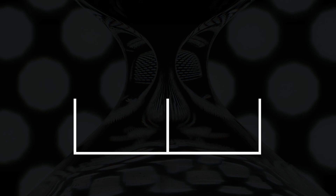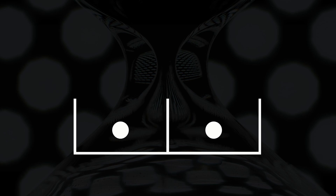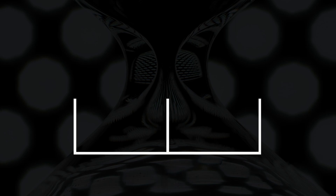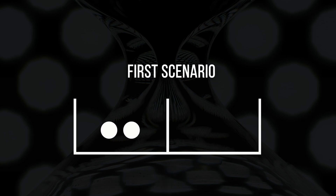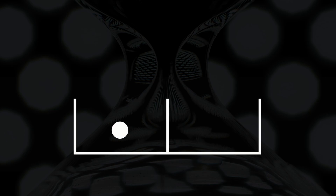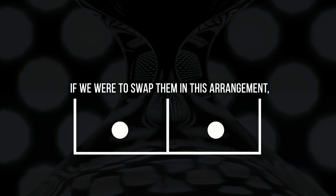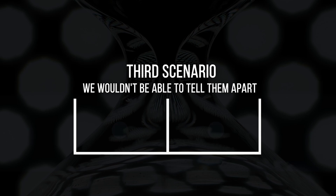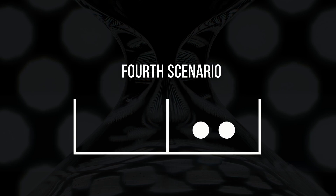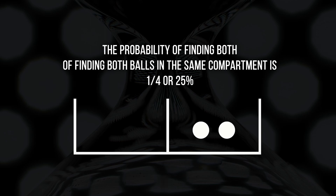Let's examine a box comprising two compartments containing a small number of balls. We'll keep it straightforward by placing two identical balls in the box. These balls are free to move between the two compartments. At any given moment, there are four possible scenarios: both balls could be in the left compartment; one ball could be in the left while the other is in the right — which actually encompasses two scenarios, since the balls are identical and indistinguishable; or all the balls could be in the right compartment. It's essential to note that all these situations are equally probable.